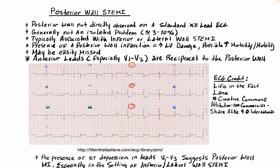The posterior wall of the heart — the back of the heart — is not directly observed on a standard 12-lead ECG. However, there are some things we can look at that strongly suggest the presence of a posterior wall STEMI. First and foremost, generally speaking, posterior wall MIs are not isolated. It's not as common to see a posterior wall MI by itself, and we see this in approximately 3 to 10% of all cases of myocardial infarction.